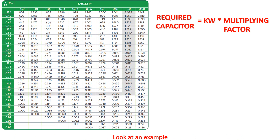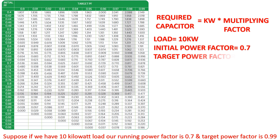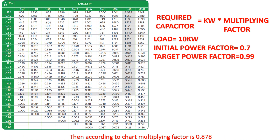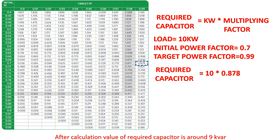Look at an example. Suppose we have a 10 kilowatt load, our running power factor is 0.7, and the target power factor is 0.99. According to the chart, the multiplying factor is 0.878. So the required capacitor is equal to 10 into 0.878. After calculation, the value of the required capacitor is around 9 kVAR.